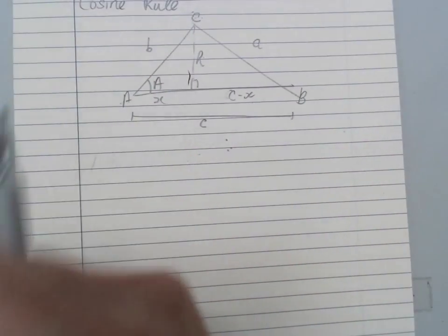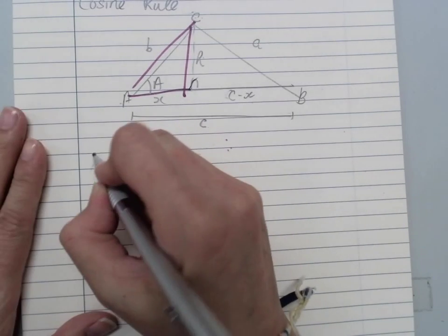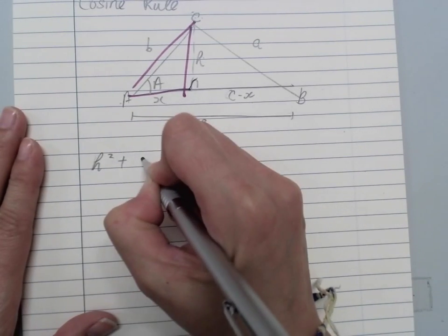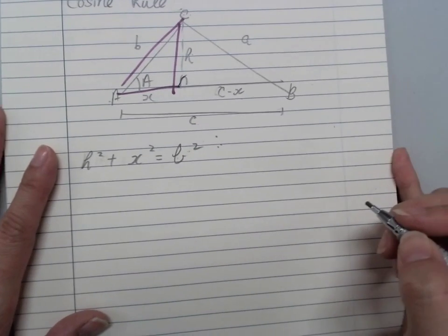So when we're looking at this angle, I have H² + X² = B². Very happy, isn't it?